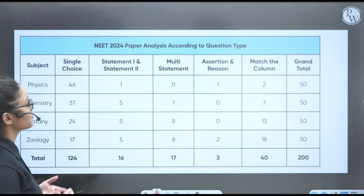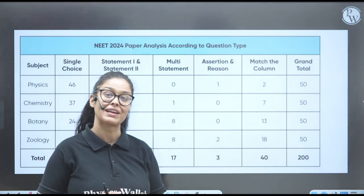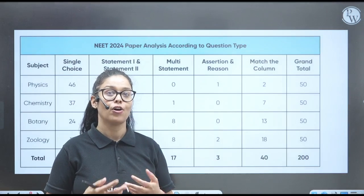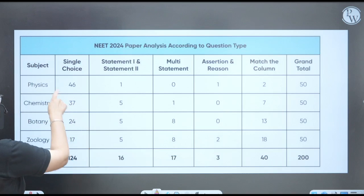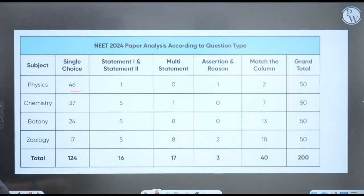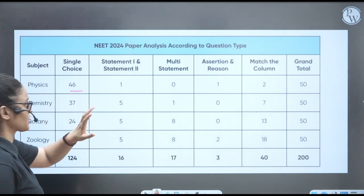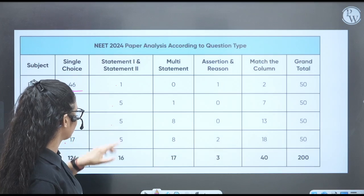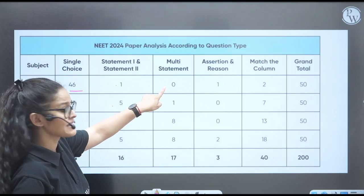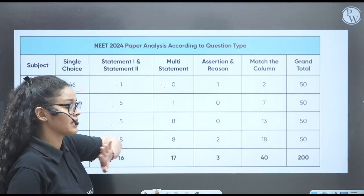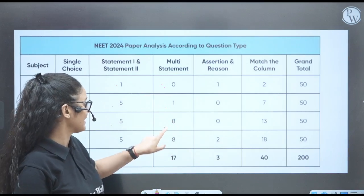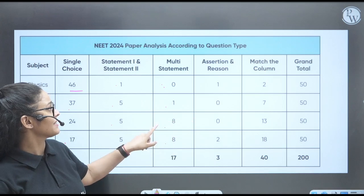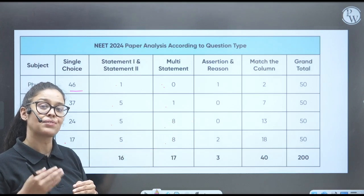Now we will see what kind of questions they have asked, what type of question you should practice. So in Physics, they have asked single type 46, single choice question: 37, 24, 17. Statement based, only one, five, five, five questions. Multiple statement-wise questions - so in Physics, zero questions, one, eight, eight. See, they have asked many questions on the multiple statement, and that's why the paper was lengthy.